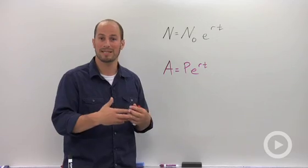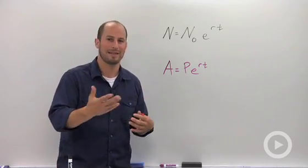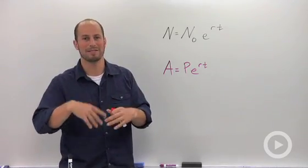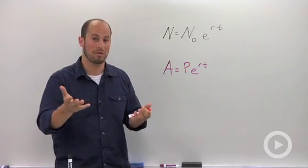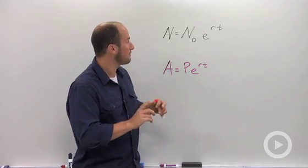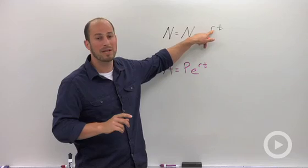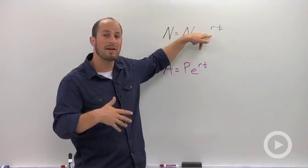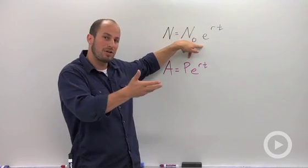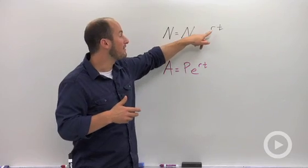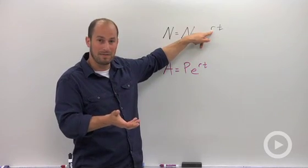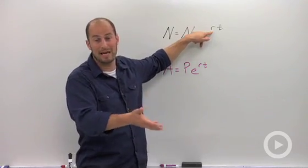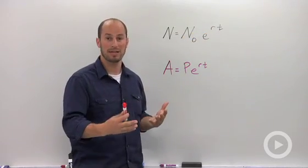Exponential growth means something is getting bigger. Think of rabbits multiplying rapidly—that's exponential growth. How that actually pans out is if this r, this rate, is positive, then our terms are growing, we're getting bigger. If this r is negative, then our terms are getting smaller. That'll be decay.